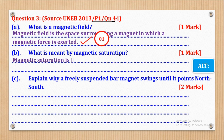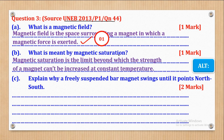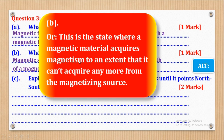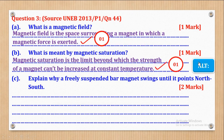Next: what is meant by magnetic saturation? Magnetic saturation is the limit beyond which the strength of a magnet cannot be increased at constant temperature. Alternatively, this is the state where a magnetic material acquires magnetism to an extent that it cannot acquire any more from the magnetizing source. Either definition earns one mark.